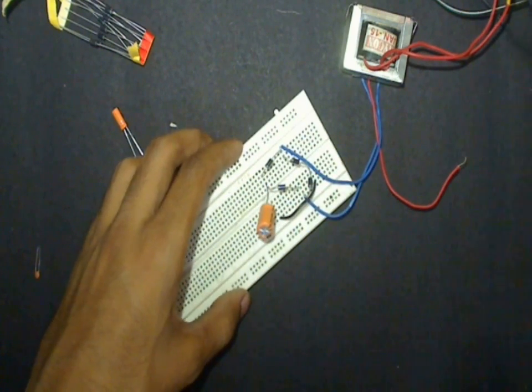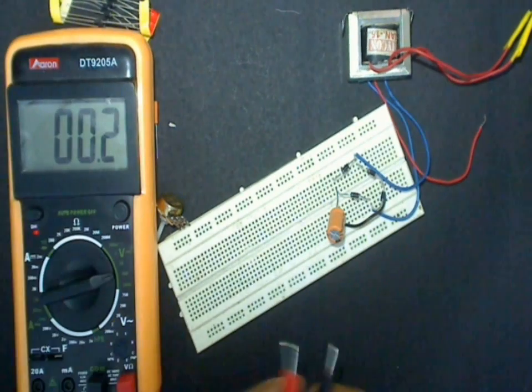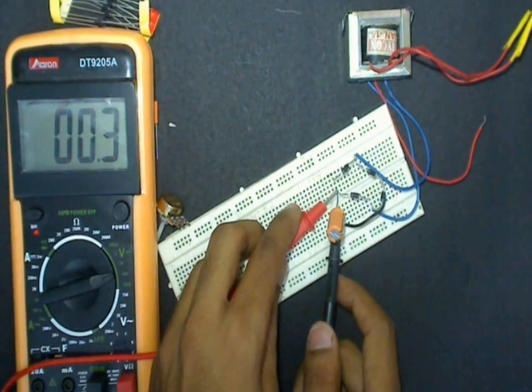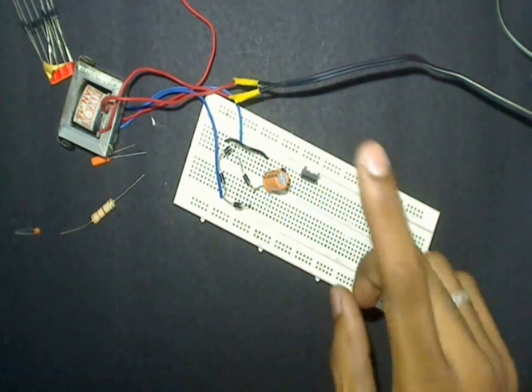Now let's test the output of this capacitor. It should be approximately 24 to 30 volts including the RMS voltage. Now let's connect the regulator part.